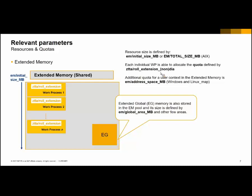With profile parameters ZTTA_ROLL_EXTENSION_DIA and ZTTA_ROLL_EXTENSION_NON_DIA, you can allocate different extended memory quotas for dialogue users and non-dialogue users. There is one additional quota to consider for a user context in extended memory, mainly for Windows environment but also on Linux with MAP implementation, which is the EM_ADDRESS_SPACE_MB parameter. This parameter should be big enough to allocate the extended memory quota ZTTA_ROLL_EXTENSION plus the extended global memory. The extended global memory is located in the extended memory, and its size is mainly defined by parameter EM_GLOBAL_AREA_MB. This area is reserved for global data that is user-independent and work-process-independent.